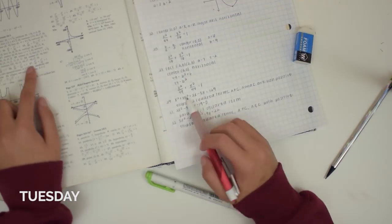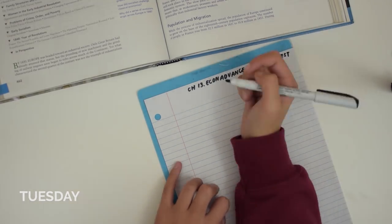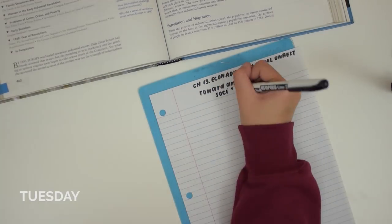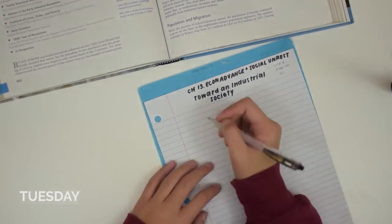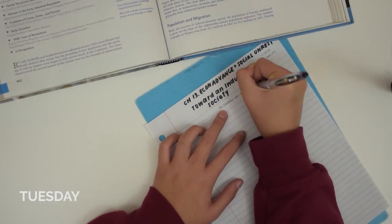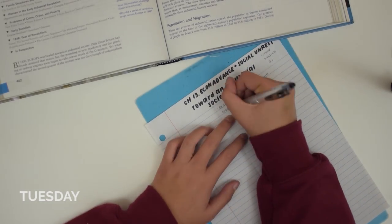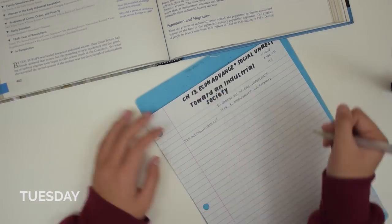Anyways, now I'm checking the answers for my math homework and then switching over to taking notes from my AP European history textbook. If you'd like to know the process for how I take these notes, I have a video about it called how I take history notes, which I'll link in the cards.